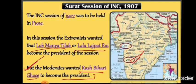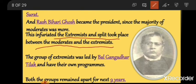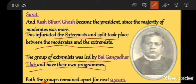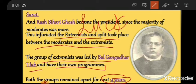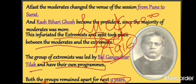This infuriated the extremists, and both groups set apart from each other. The extremist group, led by Bal Gangadhar Tilak, decided their own programs and took separate steps. Both the moderate and extremist groups remained apart for the next nine years. We will later learn about the Lucknow Pact of 1916, when they reunited. This is the Surat Split — Congress split because the two groups' methods and ideologies had diverged.